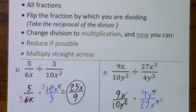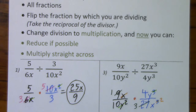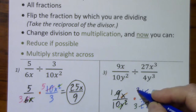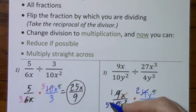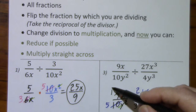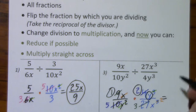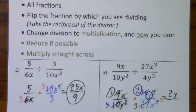We have a common factor of 9: divide by 9, leaves us with 3; divide by 9, leaves us with 1. And a common factor of 2 — divide by 2, divide by 2. We've reduced all that we can, so we multiply straight across. That's just a 1, 2, and a y — so 2y over 15x squared.